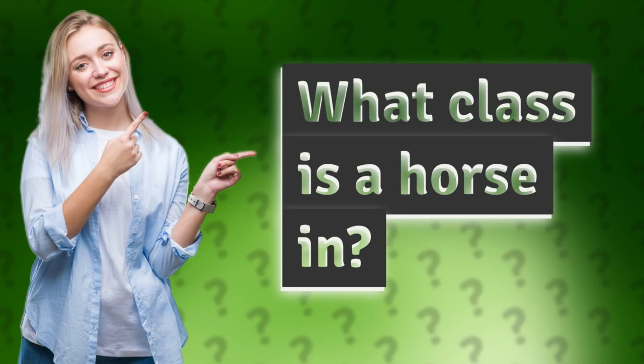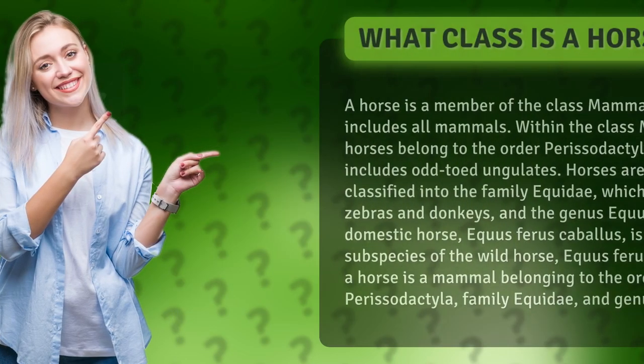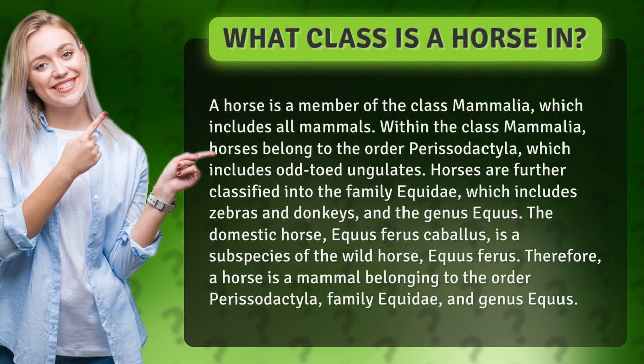What class is a horse in? A horse is a member of the class Mammalia, which includes all mammals. Within the class Mammalia, horses belong to the order Perissodactyla, which includes odd-toed ungulates.